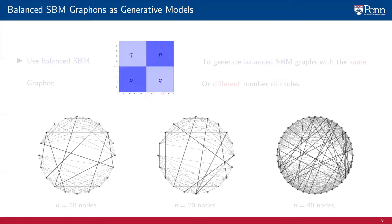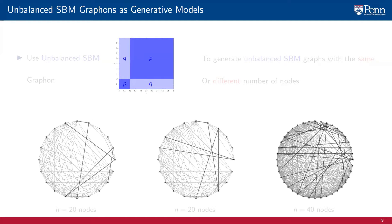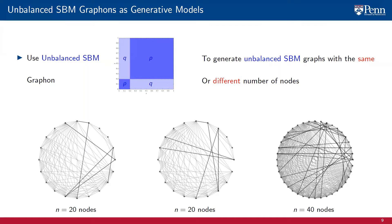This latter observation is more clear if we consider further examples. For instance, consider the balanced SBM graphon. As we did with the uniform graphon, we can use this balanced SBM graphon to generate balanced SBM random graphs with the same or with a different number of nodes. These graphs are different from each other.